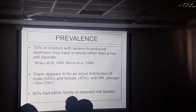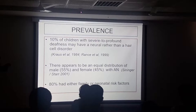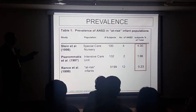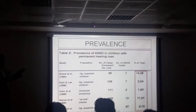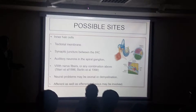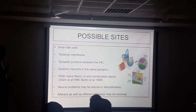About 10% of children with severe to profound deafness may have an auditory neuropathy. There appears to be equal distribution between male and female. About 80% have a family history or neural risk factors. In at-risk infant populations, prevalence is about 1 to 4%. In patients with permanent hearing loss, it can be from about 5% to 15%. The possible sites include the inner hair cells, the tectorial membrane, the eighth nerve — whether it is a neural problem, axonal, or demyelination of the nerve — and it can also affect the efferent pathways.